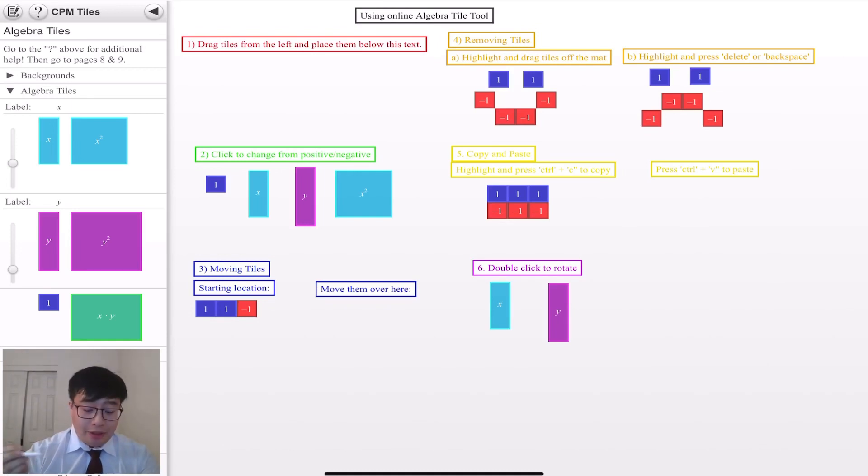So the first thing you guys can do is click and drag these different tiles onto the mat. So if you're following along, go ahead and try dragging a couple of these tiles onto the mat, like so.